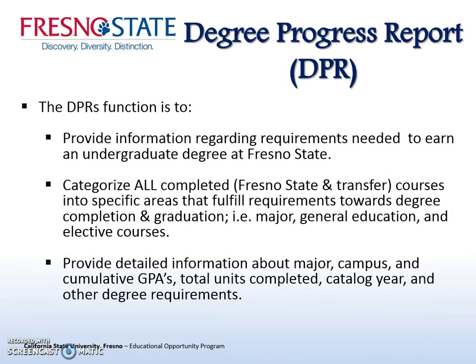Now let's talk about a very useful class planning tool, the Degree Progress Report, which we often refer to as the DPR. The DPR provides information regarding requirements needed to earn an undergraduate degree at Fresno State. It categorizes all completed Fresno State and transfer courses into specific areas that fulfill requirements towards degree completion and graduation requirements, including your major and general education requirements. The DPR also provides detailed information about major, campus, and cumulative GPA, especially important if you are planning to apply to graduate school.